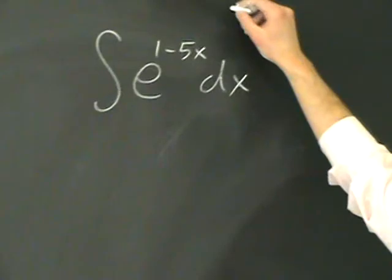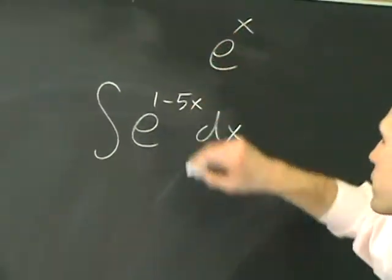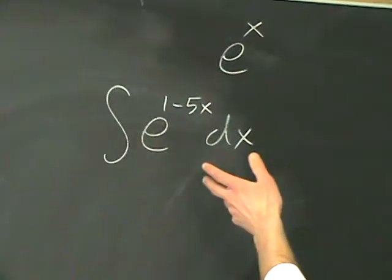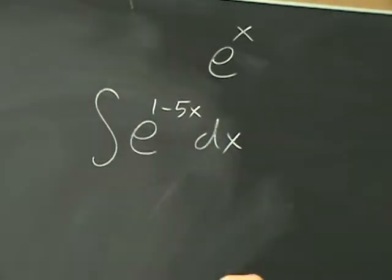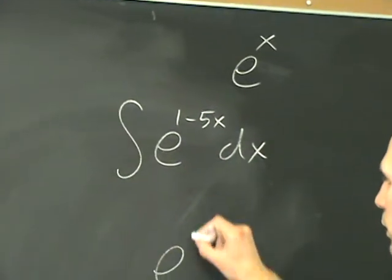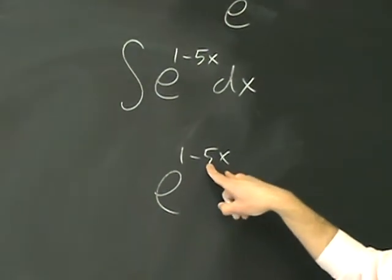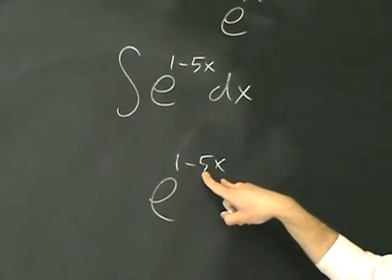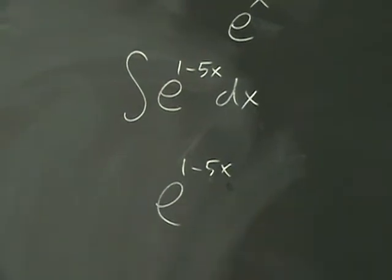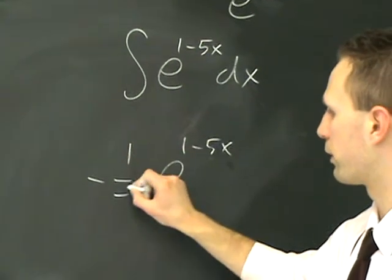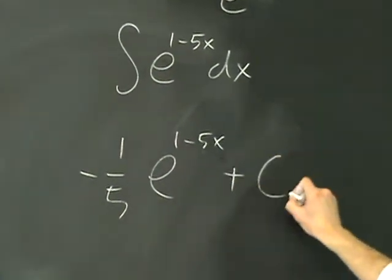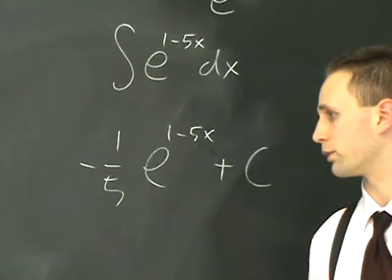This is awfully similar to e to the x. So the anti-derivative of e to the x is just e to the 1 minus 5x. Although, since x is being multiplied by minus 5, you have to compensate for that by putting a minus 1 5th out front. And you can check it with anti-differentiation.